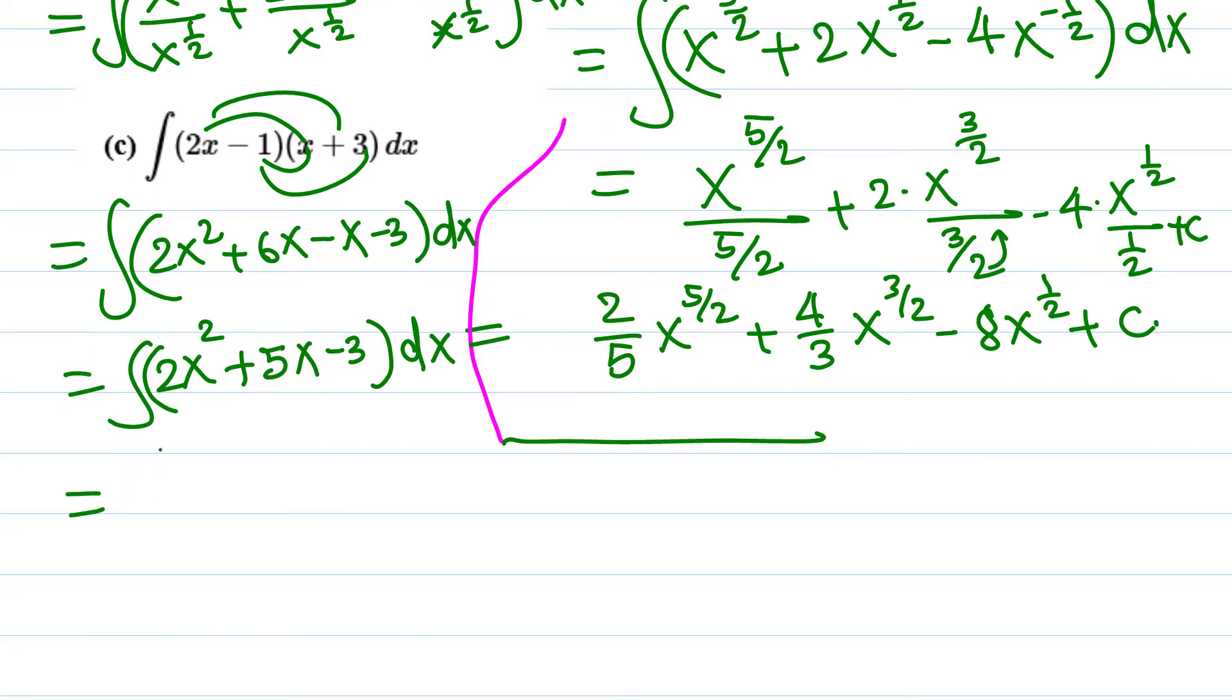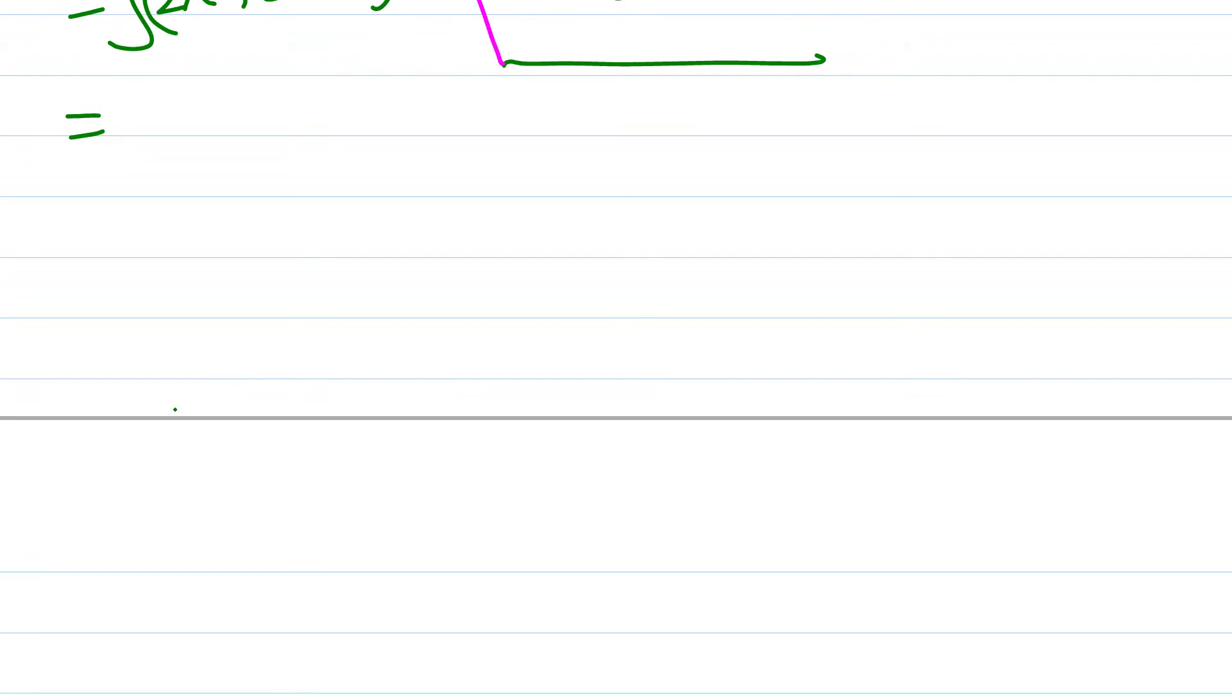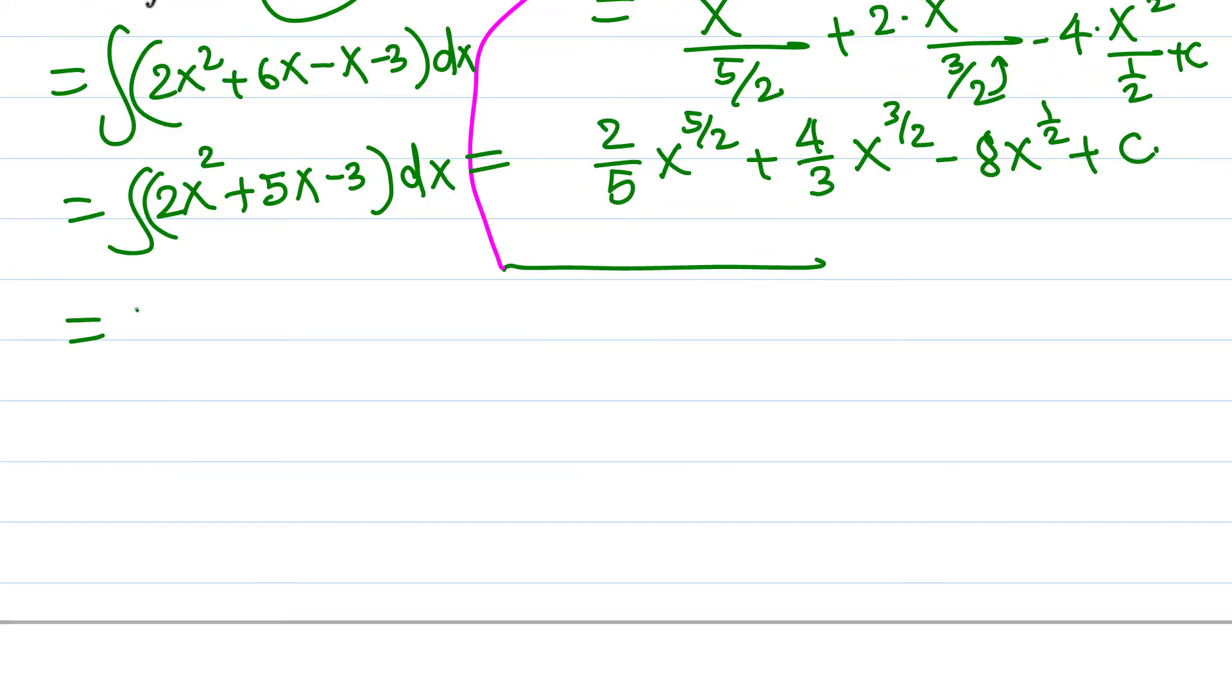Let's find the antiderivative. 2x² means x raised to 3 over 3, so 2/3 x³. Plus 5x means x squared over 2, which is 5x²/2. Minus 3, where the antiderivative of a constant 3 is 3x, because the derivative of 3x is 3. Plus C for the most general. This is the final answer - we can write 2/3 x³ + 5x²/2 - 3x + C.